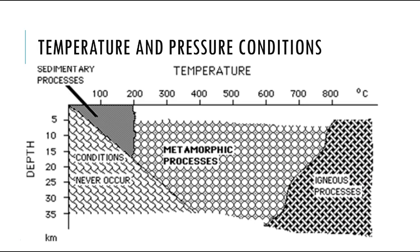Not all minerals are under the same conditions of temperature and pressure. Clay minerals found in sedimentary rocks are stable under low temperatures and pressures, and are therefore found near the surface of the earth, as we can see on this diagram. If these minerals are subjected to very high temperatures and pressures, they change to form other minerals — clay will change to form biotite and muscovite. Micas are formed under high pressures and are therefore seen in metamorphic rocks and also in igneous rocks.